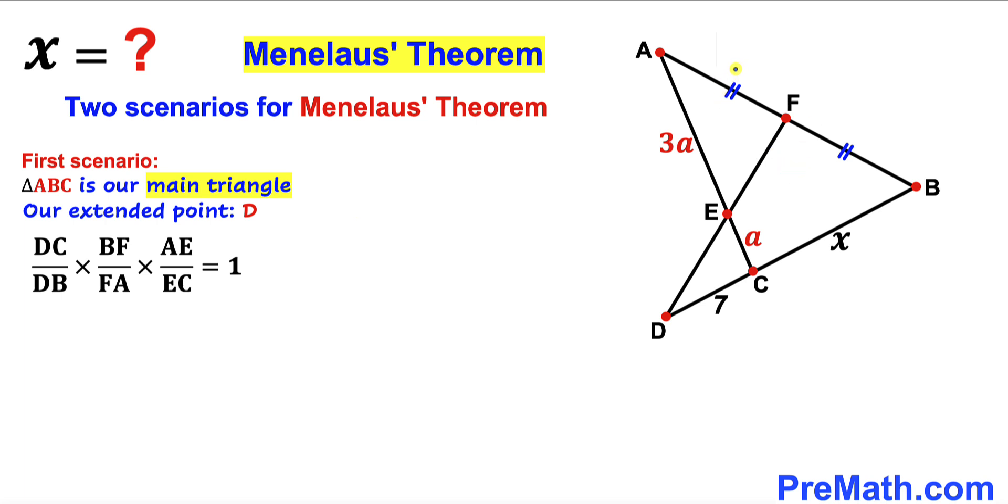And we can see that these two side lengths AF and FB are same. Let's assume that this side length is lowercase b and this side length is lowercase b as well.